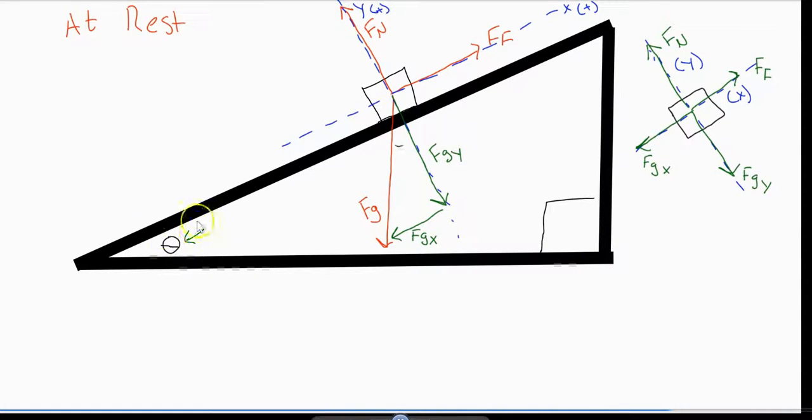The next important thing, which we can prove using geometry but we're not going to in this video, is that this angle theta turns out is this angle theta. This is a 90 degree triangle, just like this is a 90 degree triangle. They have to be similar triangles. This is the similar angle. So by extension, we can rewrite this fgx and this fgy as components of this triangle, where our weight, our fg, is our hypotenuse.